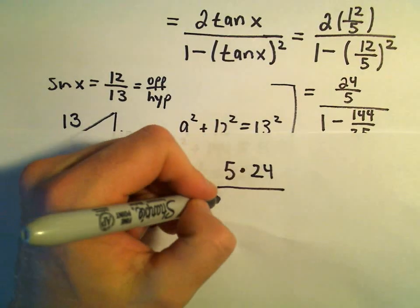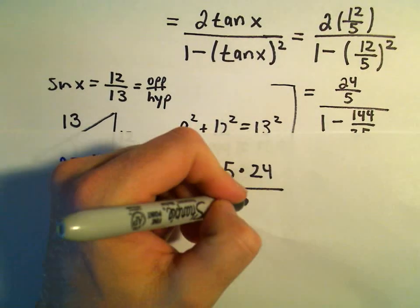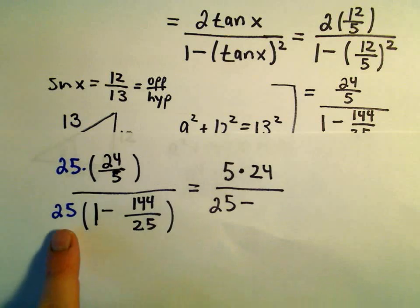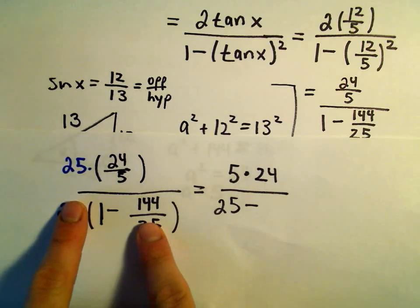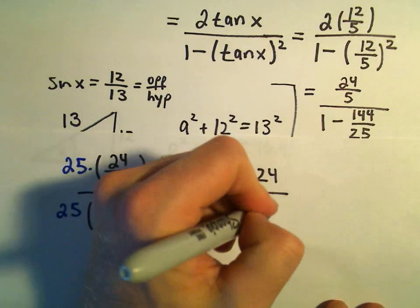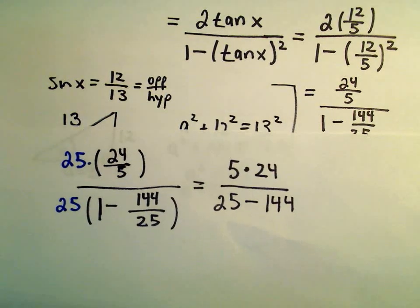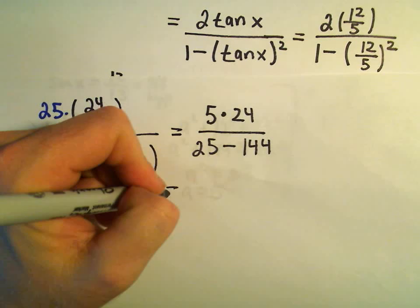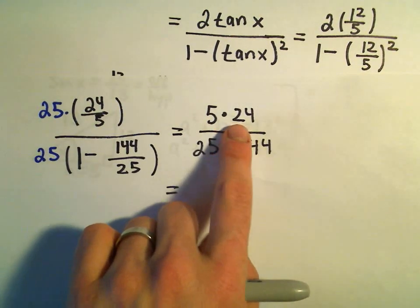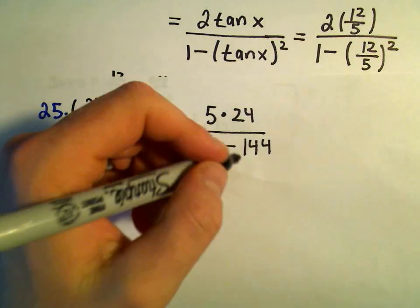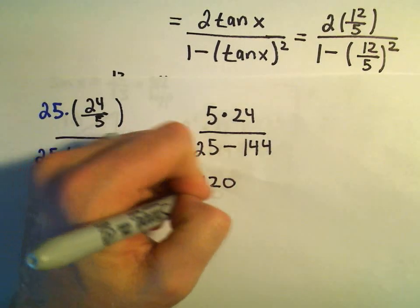25 times 1 will be 25 minus - when we distribute the 25 and the 25, that will simply cancel, so we'll be left with minus 144. And I think now we're getting a little closer. So 5 times 24: 5 times 20 is 100, 5 times 4 is 20, so 120 is what we'll get in the numerator.